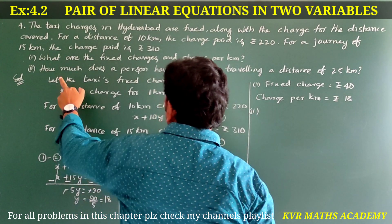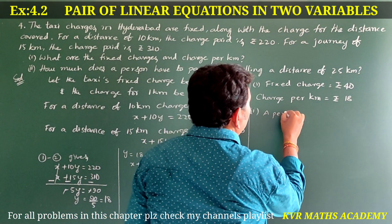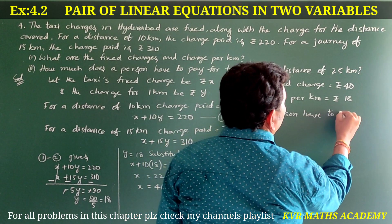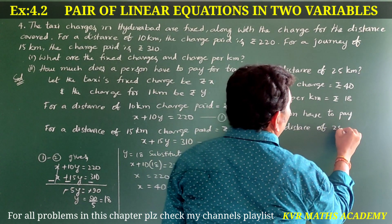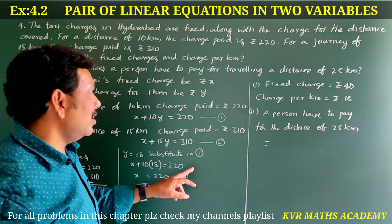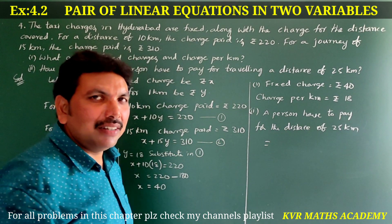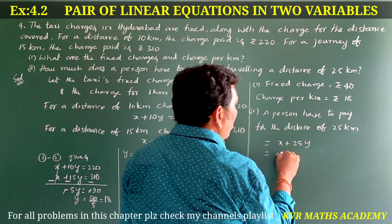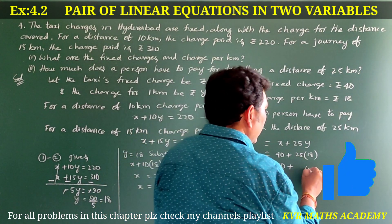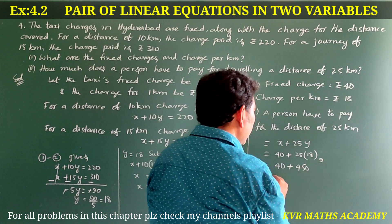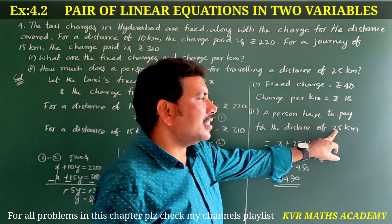For a person traveling a distance of 25 kilometers, the total charge is x plus 25y. Substituting x equals 40 and y equals 18: 40 plus 25 into 18 equals 40 plus 450 equals 490 rupees. So he has to pay 490 rupees for traveling a distance of 25 kilometers.